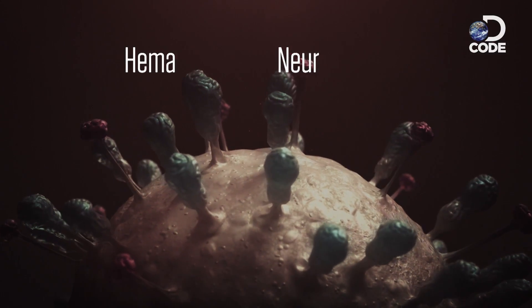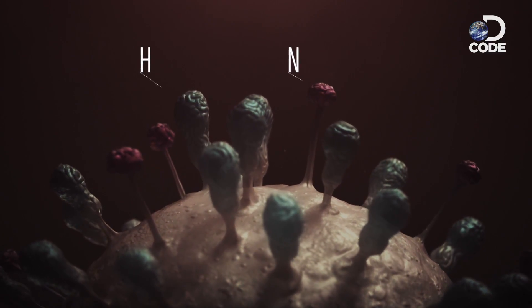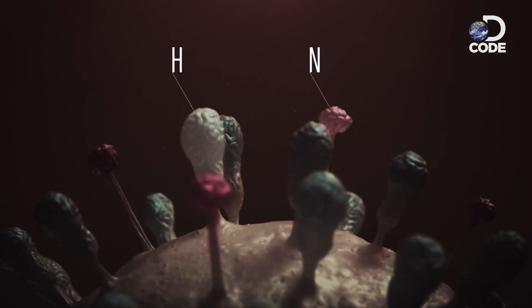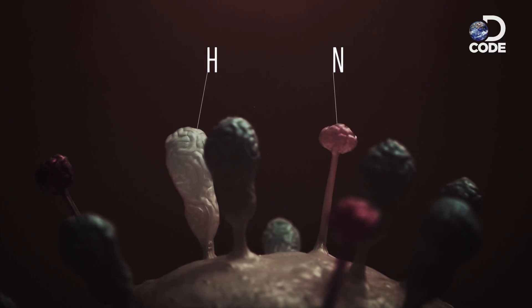There are different subtypes of influenza, and they're named by the two surface proteins, hemagglutinin and neuraminidase. We tend to shorten that to just H and N. Each of those proteins has its own variants: one, two, three, four, and so on. So you can have an H1N1 flu virus or an H2N2.